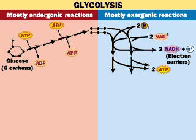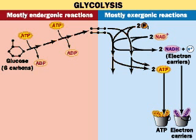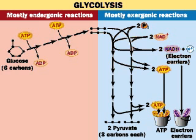Likewise, two molecules of NAD-plus are reduced to NADH for each molecule of glucose. Further reactions produce two more ATPs, giving a total of four ATPs. Since two ATPs are used in the pump-priming steps, glycolysis gives a net gain of two ATPs per molecule of glucose.